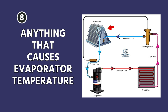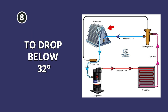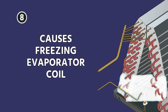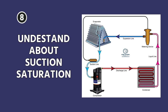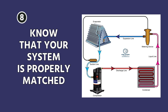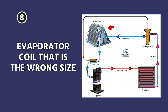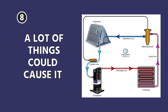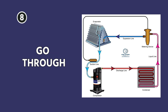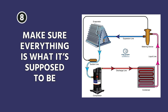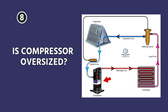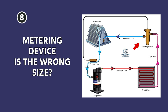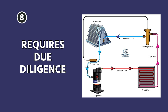You want to confirm all refrigeration cycle components and processes are functioning properly, as there are a lot of things that can potentially go wrong depending on the type of system you're working on. Anything that causes your evaporator temperature to drop below 32 degrees is what causes a freezing evaporator coil. You have to understand suction saturation and know that your system is properly matched. If you have an evaporator coil that's the wrong size to match the condensing unit, that can cause the problem. Make sure nobody slammed in a compressor that's way oversized or a metering device that's the wrong size.